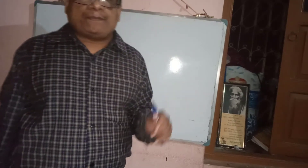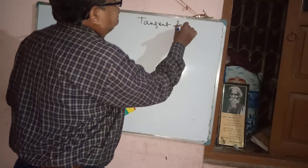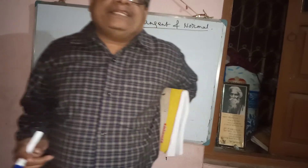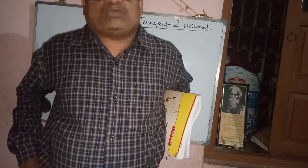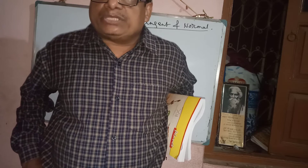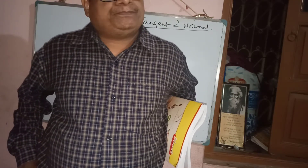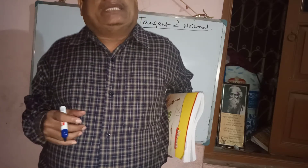Good morning students. Today I will teach tangent and normal with a few sums. I have already discussed tangent and normal in the previous class, so all of you know the equation of tangent and equation of normal. The equation of tangent to y = f(x): first find dy/dx, and then the equation of tangent is y - y₁ = (dy/dx at x₁,y₁) × (x - x₁). The normal equation is y - y₁ = -1/(dy/dx) × (x - x₁).